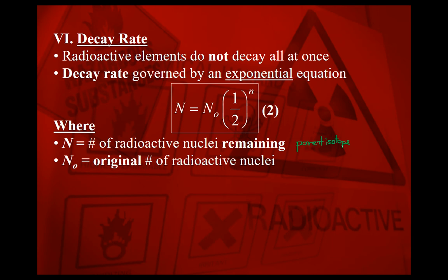N₀ represents the number of parent isotope nuclei that you started with in the first place. Little n represents the number of half-lives that have passed.